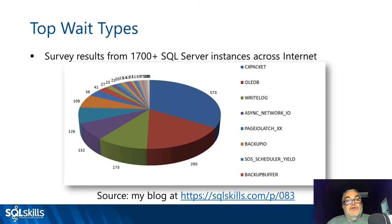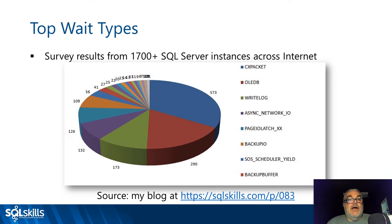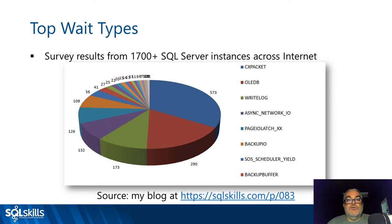The list of top waits from the survey — a statistically valid global sample — shows: CX packet from parallelism at number one; OLEDB (likely from third-party monitoring tools) at number two; write log waits; async network IO; page IO latch — all of which we'll discuss. Backup IO can happen when backing up to a slow IO subsystem like tape or a network location. Backup buffer waits occur when backup threads wait for a buffer to write to disk.